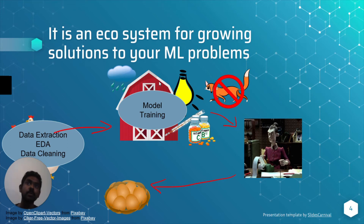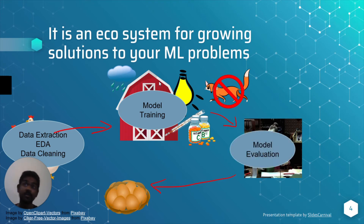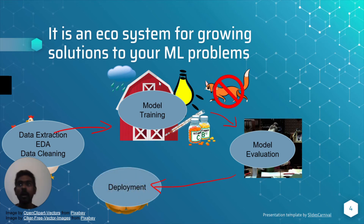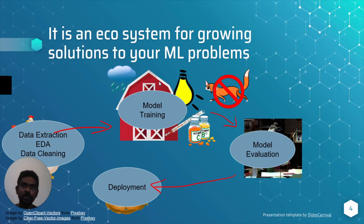Both processes aim to get the desired outcome — protecting the chicken maximizes your eggs, while model training maximizes the chances of the correct outcome. It's not enough to just provide correct conditions; you need to check if those measures are effective. Just like maintaining records for each chicken, model evaluation checks how well the model is doing. Finally, if you've provided the right conditions and ensured they're working, you collect the egg harvest — analogous to deploying your model for real-world usage.